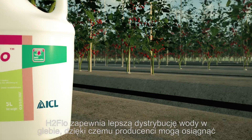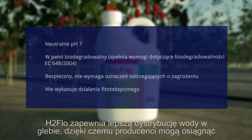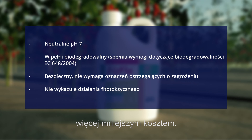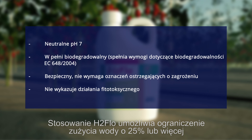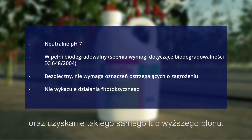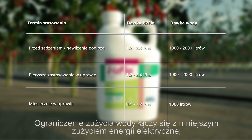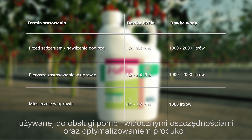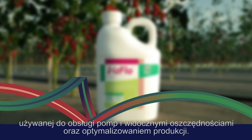H2 flow enables better water distribution throughout the soil, allowing growers to do more with less. With H2 flow, growers can reduce water usage by 25% or more while maintaining or improving yields. With this reduction in water and associated energy pumping costs, growers will see significant savings, as well as contributing towards sustainable growing practices.